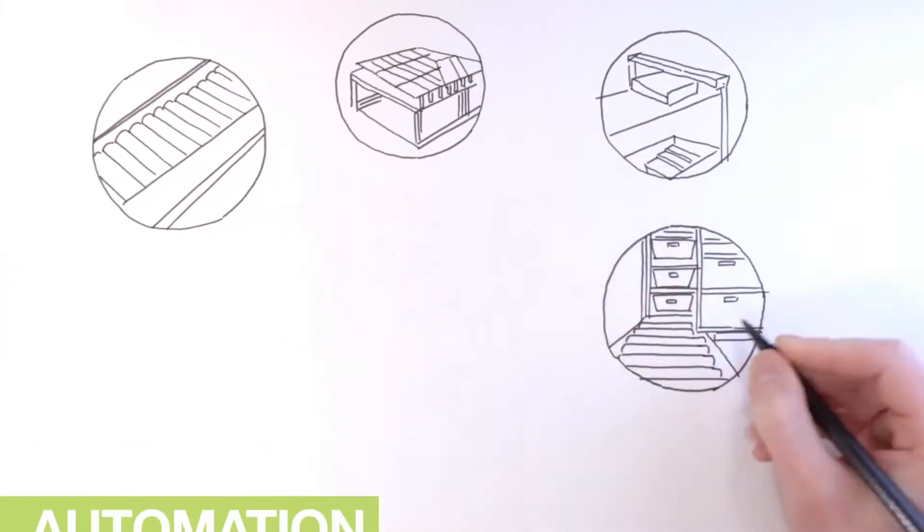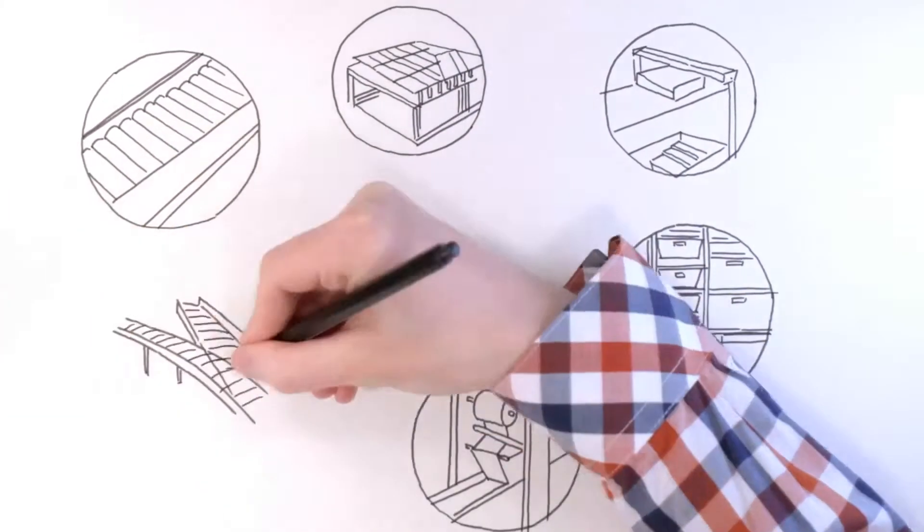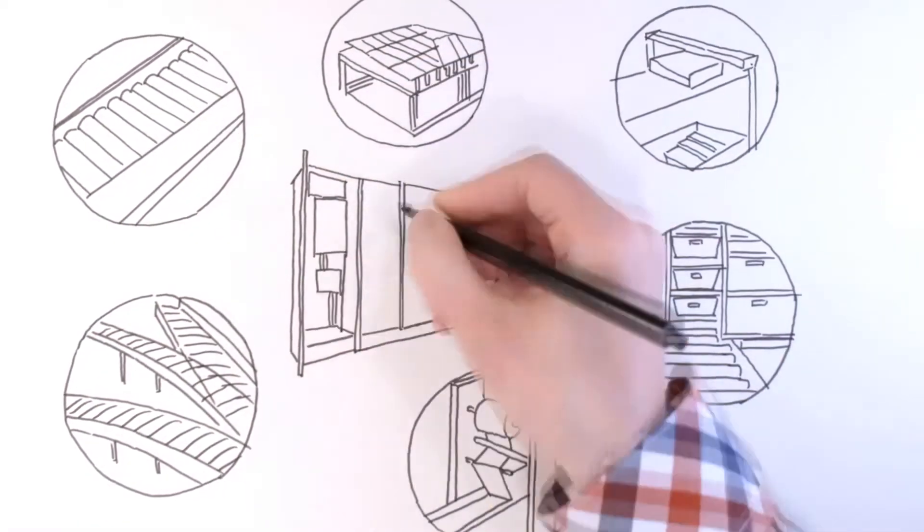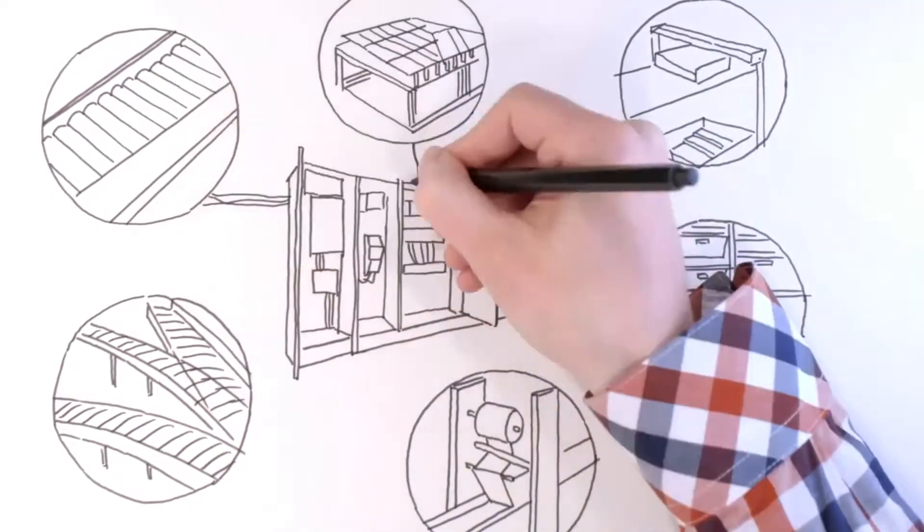A logistic system is more than the sum of its parts. Only by applying intelligent automation concepts, modern components form individual, effectively performing solutions.